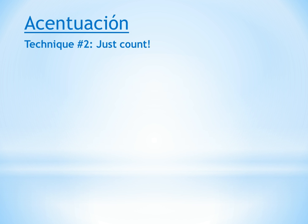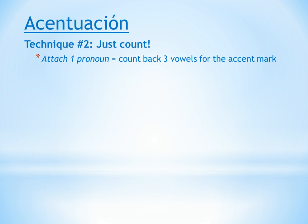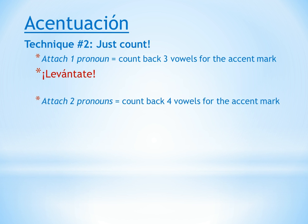For accents, the other technique — técnica número dos — is just count. Some people like this because you don't have to feel where the stress is; you just count back. If you attach one pronoun, count back three vowels for the accent mark, like in levántate — uno, dos, tres — and the accent appears over the A, the first A. If you attach two pronouns, you count back four vowels for the accent mark, like in lávatelas for wash your own hands. Hope that made sense.